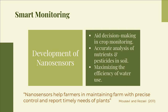In this context, nanosensors could demonstrate their potential in managing all the phases of the food supply chain, from crop cultivation and harvesting, to food processing, transportation, packaging, and distribution.